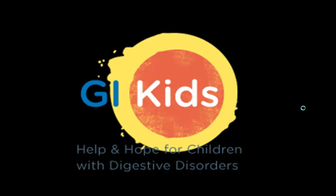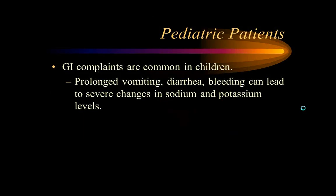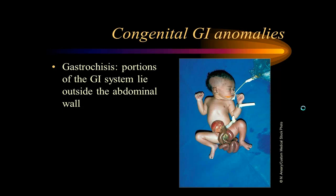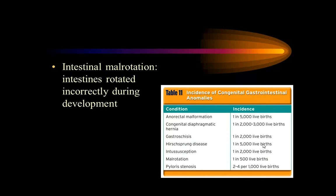Pediatric GI issues include vomiting causing sodium and potassium imbalances leading to further problems, and genetic anomalies. Gastroschisis is a condition where intestines protrude through the abdominal wall — wrap it up and put it back; often seen in premature infants. Intestinal malrotation occurs when the intestine fails to properly rotate and retract during embryological development, leading to malrotations and situs inversus.